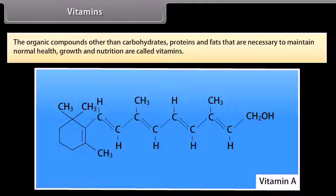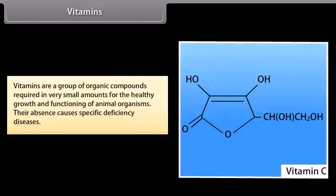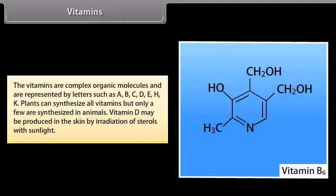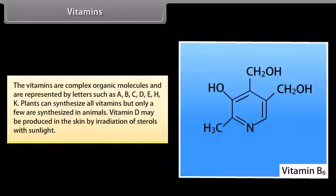Vitamins. The organic compounds other than carbohydrates, proteins and fats that are necessary to maintain normal health, growth and nutrition are called vitamins. Vitamins are a group of organic compounds required in very small amounts for the healthy growth and functioning of animal organisms. Their absence causes specific deficiency diseases. The vitamins are complex organic molecules represented by letters such as A, B, C, D, E, H and K. Plants can synthesize all vitamins but only a few are synthesized in animals. Vitamin D may be produced in the skin by irradiation of sterols with sunlight.